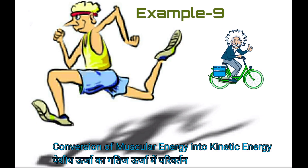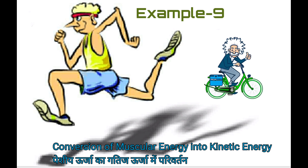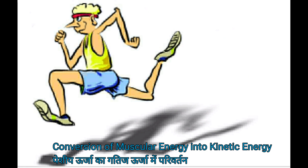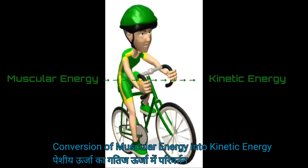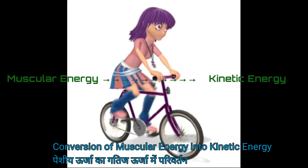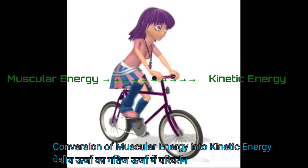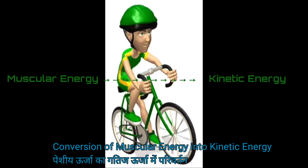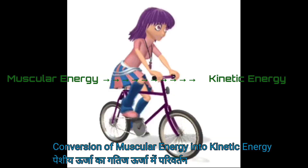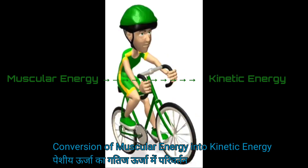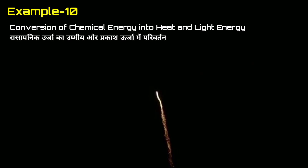Next is conversion of muscular energy into kinetic energy — Peshiya Urja ka Gatij Urja mein Parivartit. A boy riding a bicycle: the muscular energy used for pedaling a bicycle is converted into the kinetic energy of the moving bicycle. Peshiya urja ka upyog cycle ke pedal maarne mein hota hai, jisse cycle gatisheel ho jaati hai aur usmein gatij urja aa jaati hai.